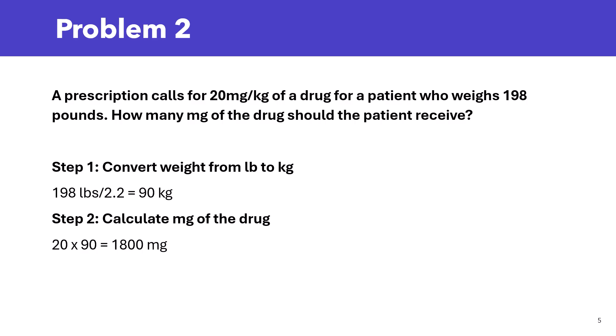The first step here is to convert the patient's weight from pounds to kg. So it's going to be 198 pounds divided by 2.2, and that's 90 kg. Then, we can calculate how many mg of the drug the patient should receive. We know that it's 20 mg per kg and we have the patient's weight, that's 90 kg. So that's going to be 20 times 90, and that's going to be 1,800 mg.